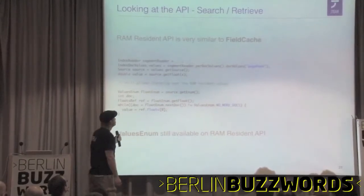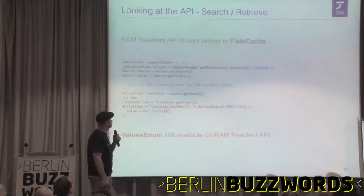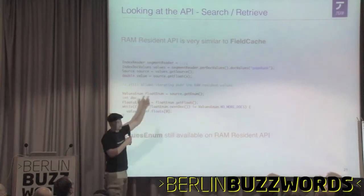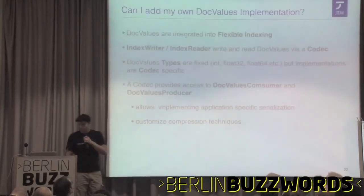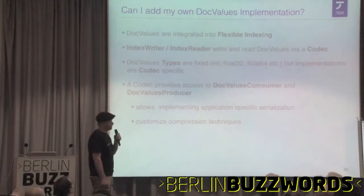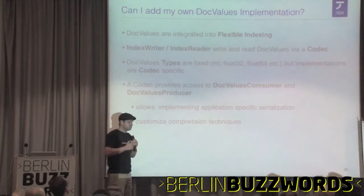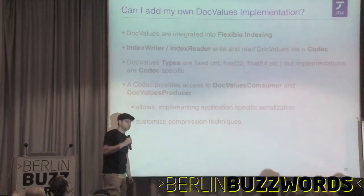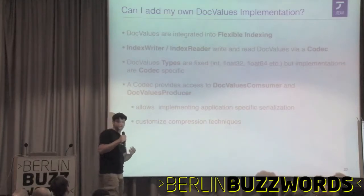For the RAM-resident API it's pretty straightforward — it's called 'source'. You call source.getFloat() for the document ID you want and get it back. You can also explicitly get a values enum from source, so it won't go to disk but just iterates over the internal representation of the source. We're also planning to have getArray() methods where you can convert your document's value API straight into an array and use it just like field cache. I actually hope we eventually get rid of field cache and replace it with doc values entirely.